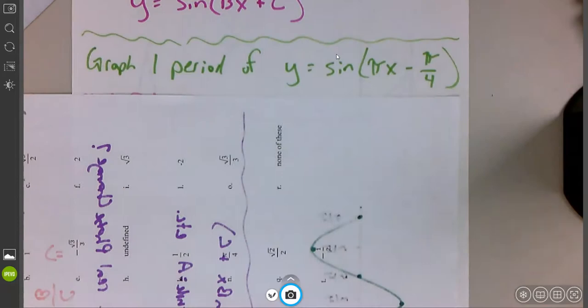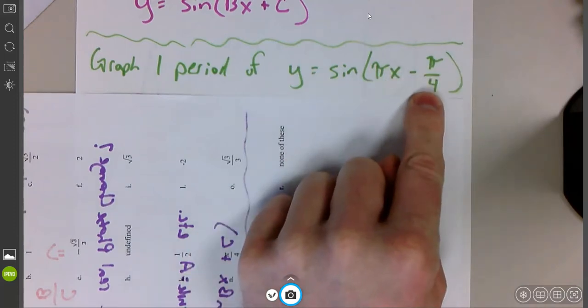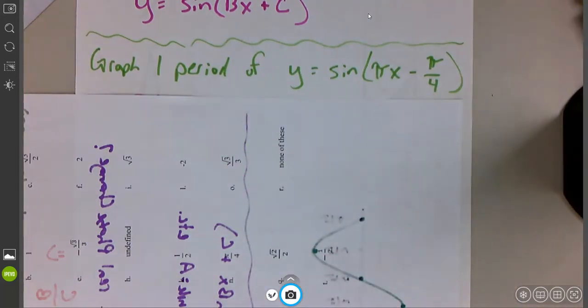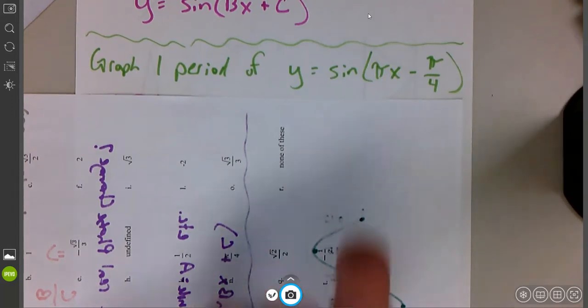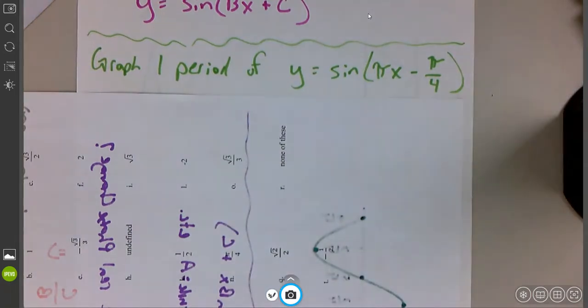It says to graph one period of y equals sine of pi x minus pi over 4. Now, a couple things of note here. First one is noticing that something's different. Because there is a period change, something being multiplied in front of the x, and there's a phase change, something being subtracted or added to the x, we are going to have to go through these steps. I cannot just look at this and say the phase change is pi over 4 to the right. We just went over that on that little Desmos activity. It's not. With the way this is written, we're multiplying by pi and we're subtracting pi over 4. So we need to figure out what the real phase shift is. The formula for phase shift is c divided by b. I'll show you where that comes from in a second.